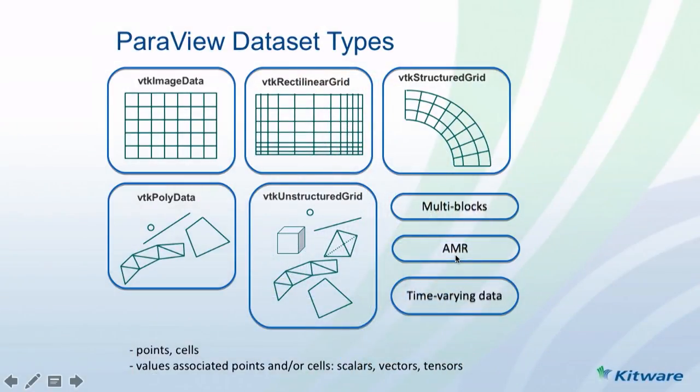AMR is an adaptive multi-resolution dataset. It tries to represent data as image data, but in certain areas you want more detail so the image data is denser. There are various optimizations to make visualization run as fast as possible using as little memory as possible.